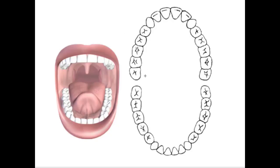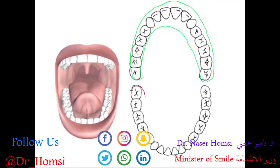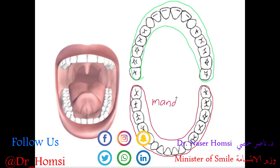This collection of upper teeth are connected to the maxilla, or the upper jawbone, so we call this the maxillary arch. The lower teeth are connected to the lower jawbone, which is called the mandible, and so this collection of teeth is referred to as the mandibular arch.